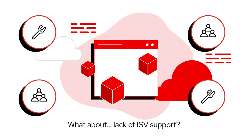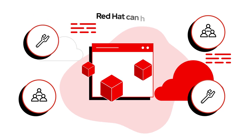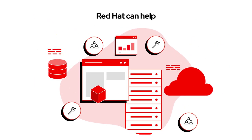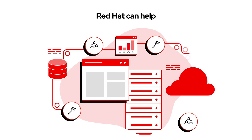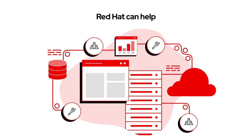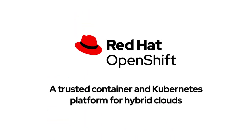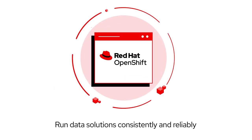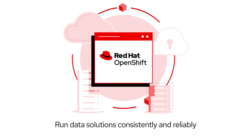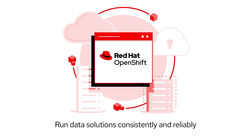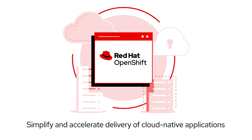So how do you overcome these? Red Hat can help, with our proven track record of helping organizations worldwide to operationalize data workloads using Red Hat OpenShift — a trusted container and Kubernetes platform for hybrid clouds that lets you run data solutions in a consistent and reliable way across clouds to simplify and accelerate delivery of cloud-native applications.